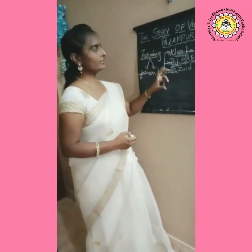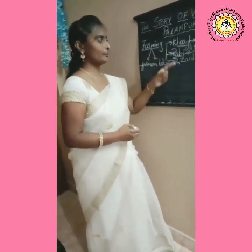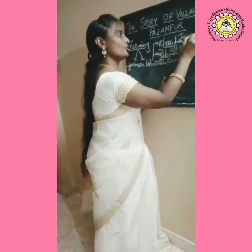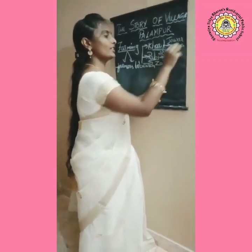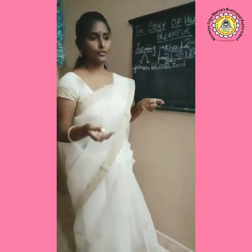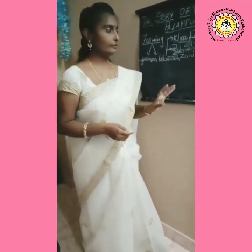Let us discuss these three seasons with reference to village Palampur. In Kharif season, Palampur farmers grow two important crops - Jowar and Bajra. These are the two crops grown in Kharif season and can be used as cattle feed. Other than this, we can also notice that in Palampur they even grow a third crop - potato - in October and December.